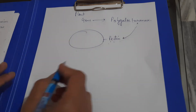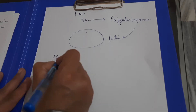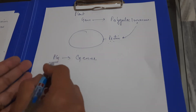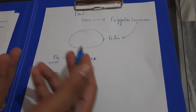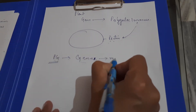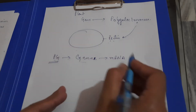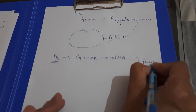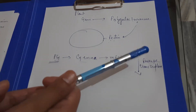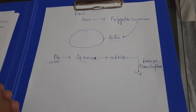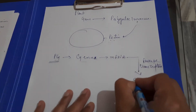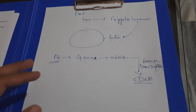Suppose we have the polygalacturonase gene. Scientists isolated this gene from the tomato plant. When the gene is expressed, it produces mRNA. Using reverse transcriptase enzyme, the mRNA is converted into complementary DNA — cDNA. This is the process of reverse transcription which we have studied in genetics.